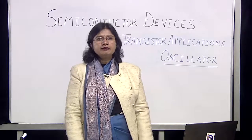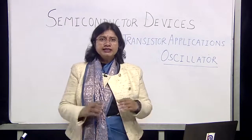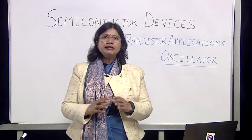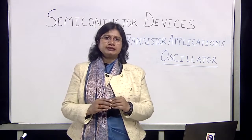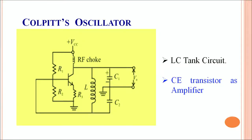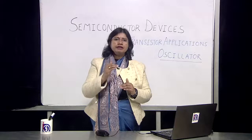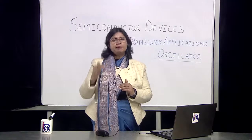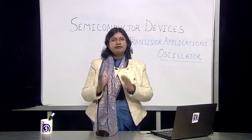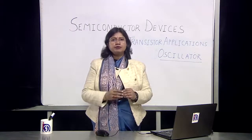To understand the working of an oscillator, we discuss a simple Cole-Pitts oscillator. This is one of the simplest oscillators, having an amplifier followed by a 180 degree phase shift feedback mechanism. Overall there are two 180 degree phase shifts so that eventually the pulse generated is in phase with the input signal.